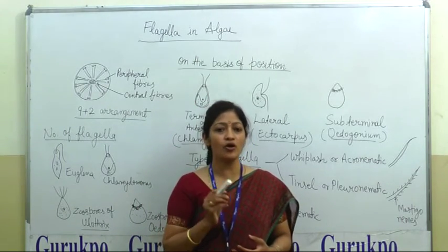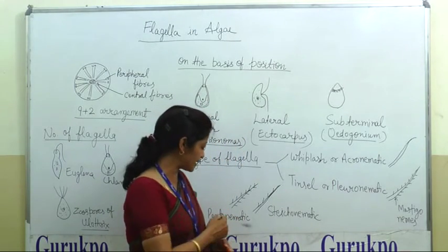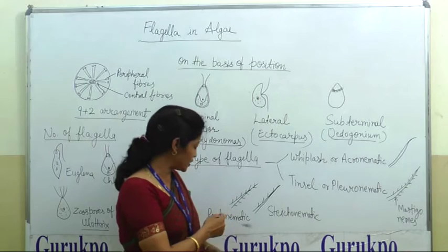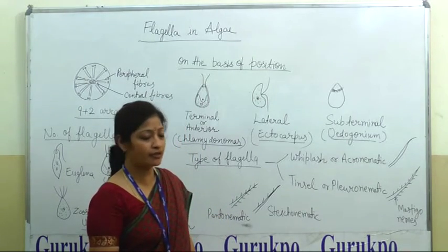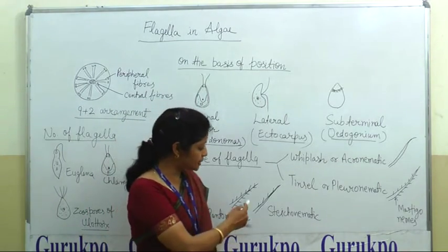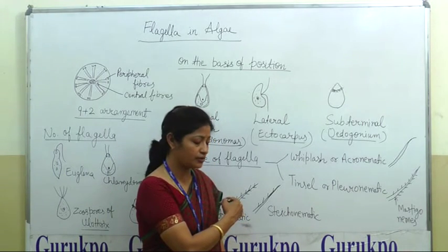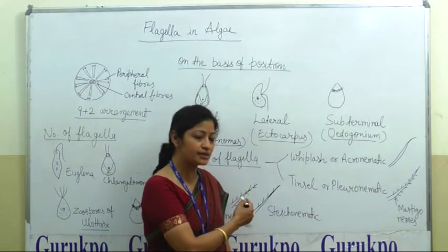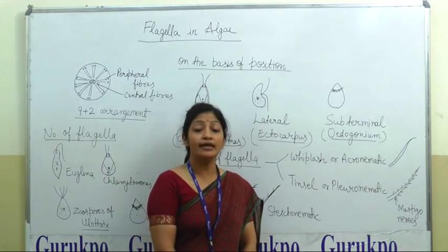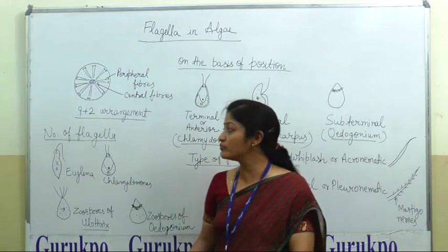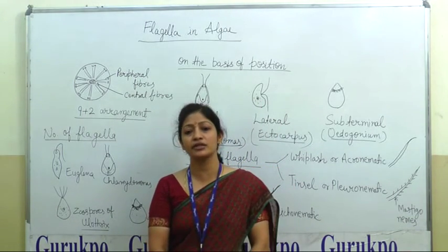If these small hair-like structures are present on both sides in opposite directions, this type is called Pantonematic flagella. And if these hairs are present on only a single side, then this is called Stichonematic. Hence, flagella — their number, their type, and their position — are important criteria used in the classification of Algae.